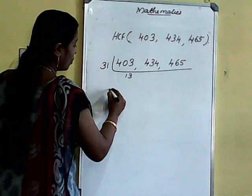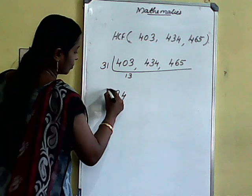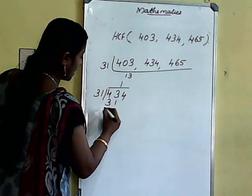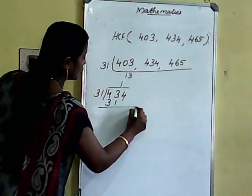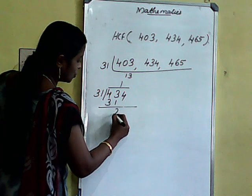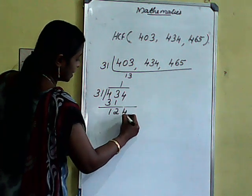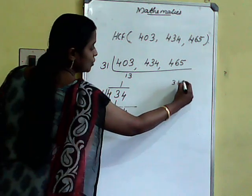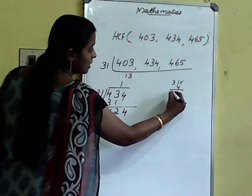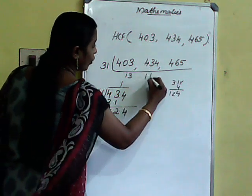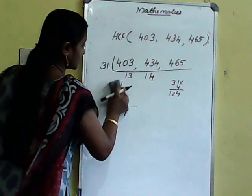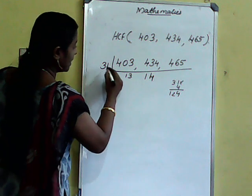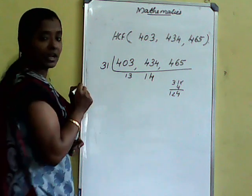Next: 434. How many times does 31 go into 434? 2 times is not possible. 31 into 14 is 434 — so 14 times. That means 31 into 14 equals 434.